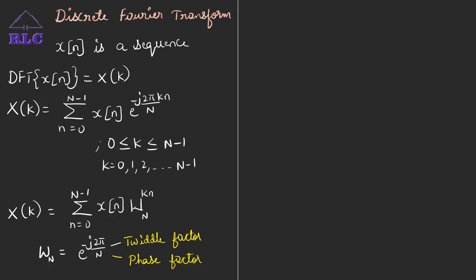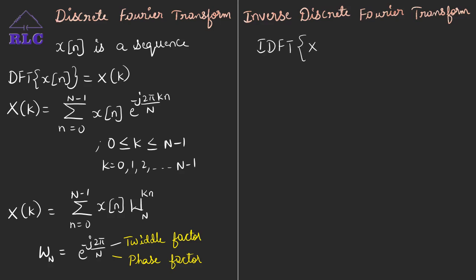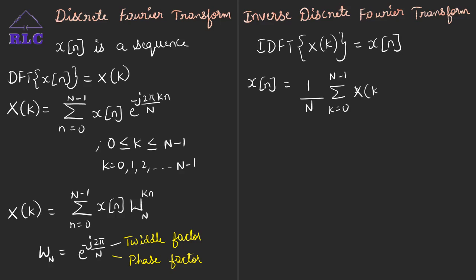Next, we have the Inverse Discrete Fourier Transform, given by IDFT. IDFT is the process of reconstructing the signal from its Fourier spectrum — that is, reconstructing x of n from X of k, where X of k is the spectrum. The inverse discrete Fourier transform is given by: x of n equals 1 over N, summation k ranging from 0 to N-1, x of k into e to the power j 2 pi k n by N, where capital N represents an N-point sample and n ranges from 0 to N-1.